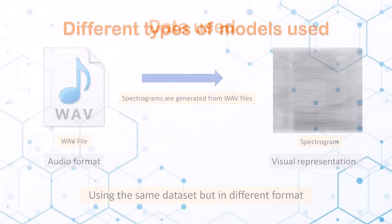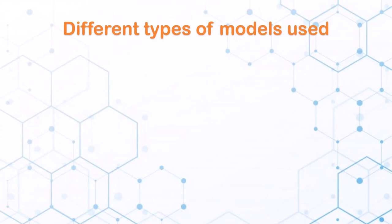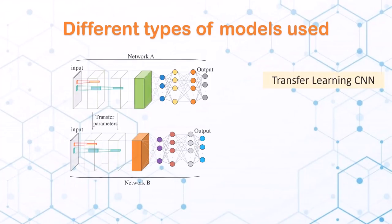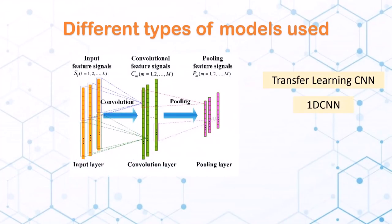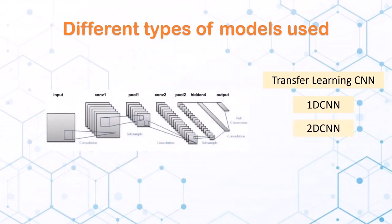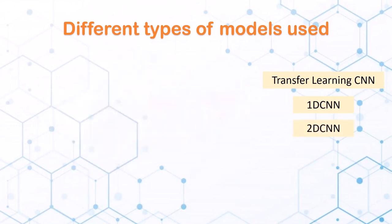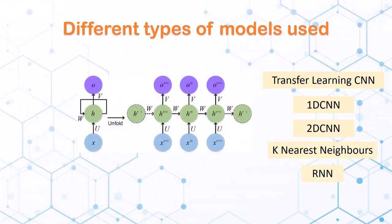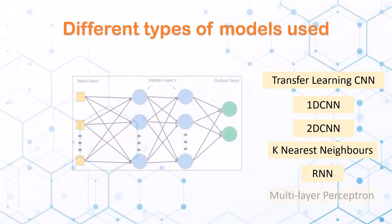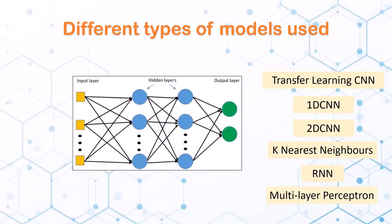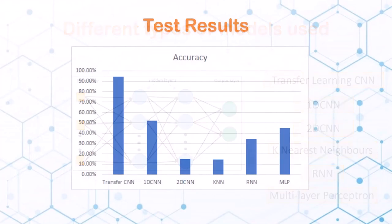The different types of models we used are transfer learning CNN, one-dimensional convolutional neural network or 1D CNN, 2D CNN, k-nearest neighbors, recurrent neural network, and multi-layer perceptron. Here are the accuracy scores for the models trained with 6 sets of recordings.